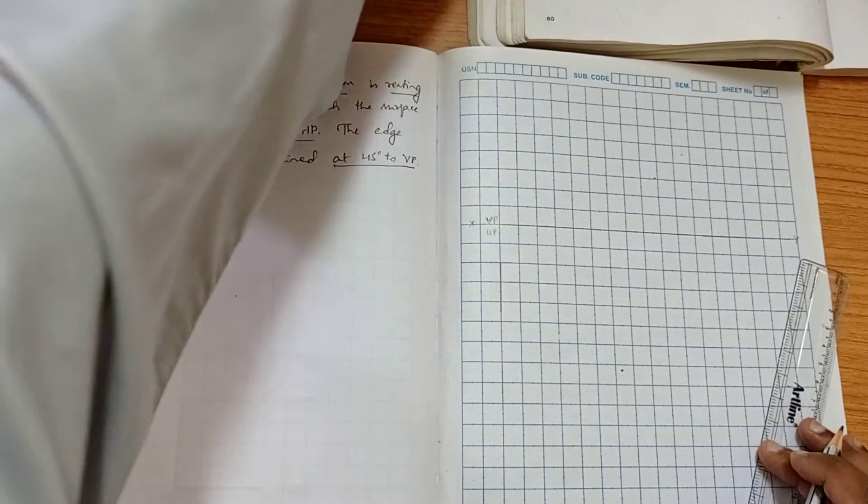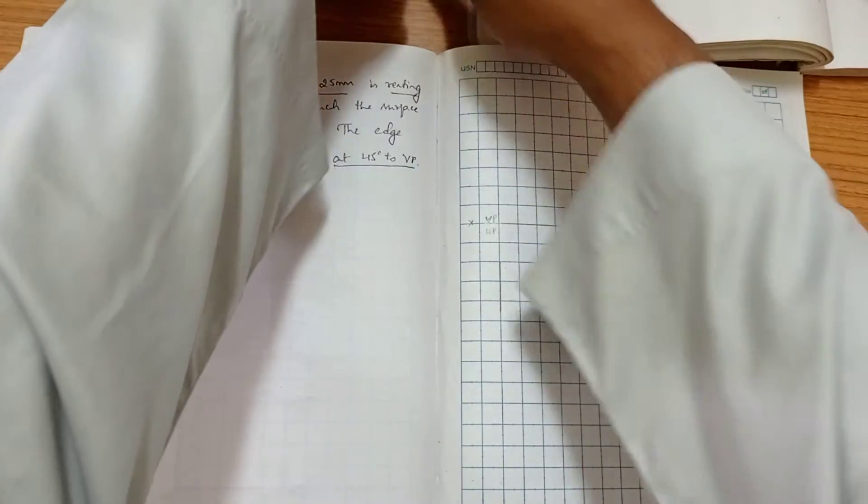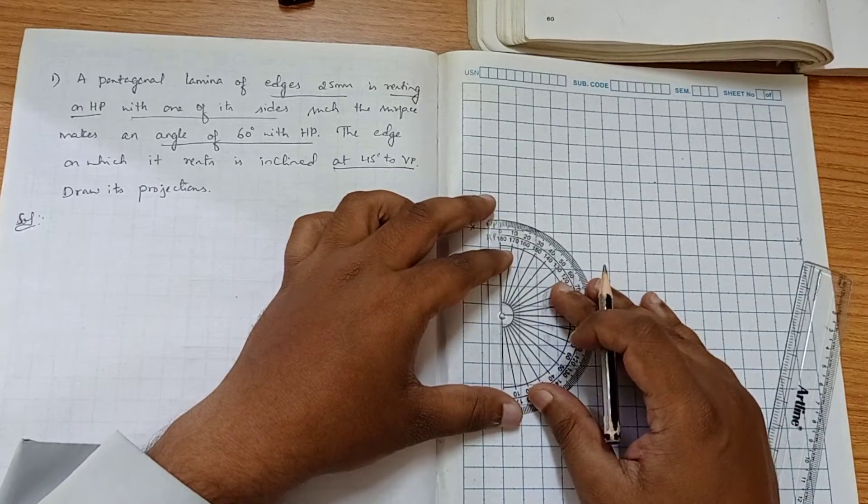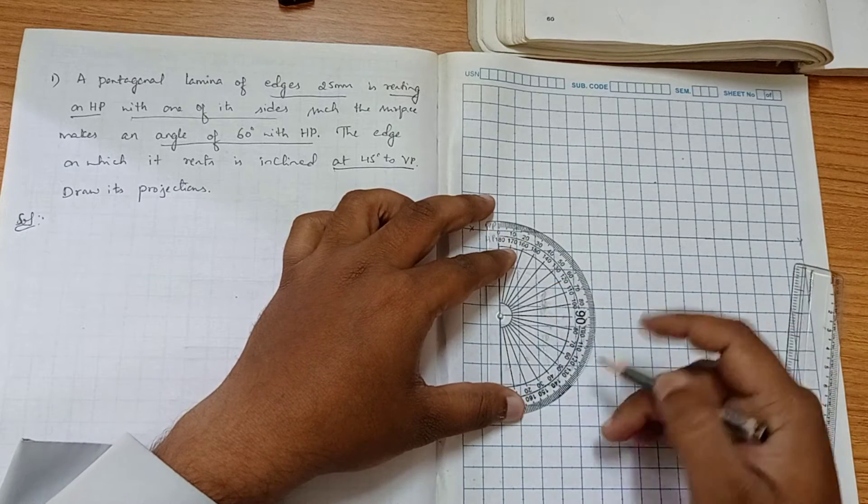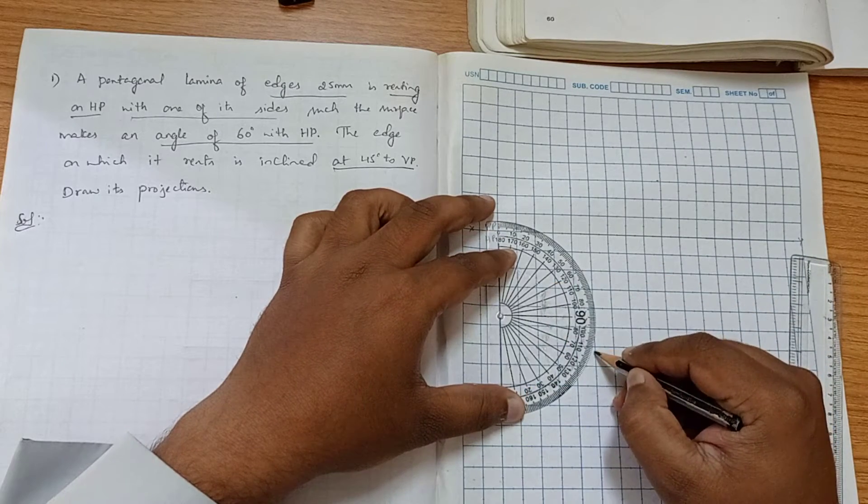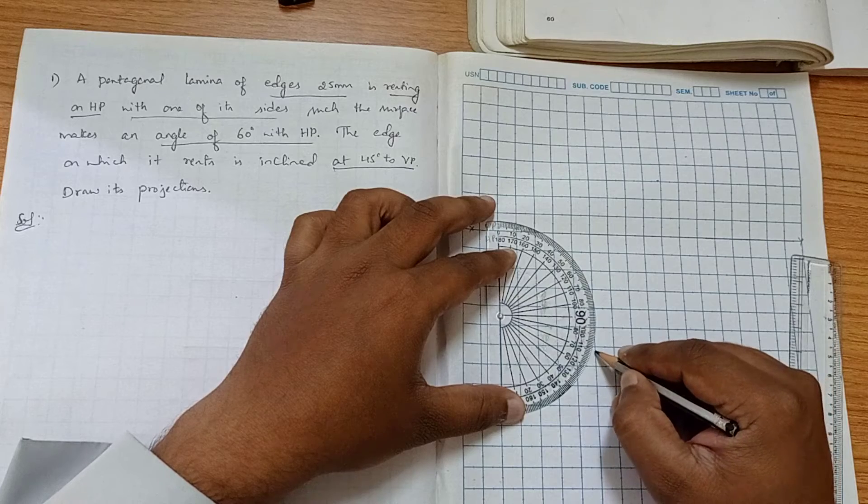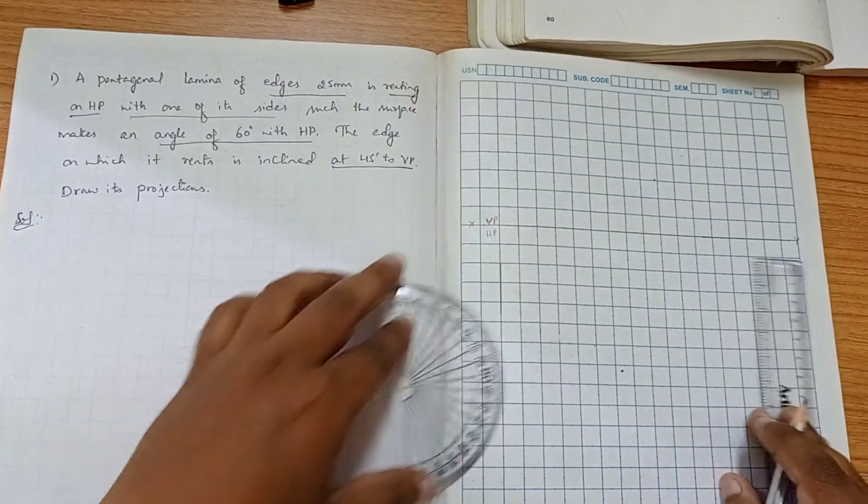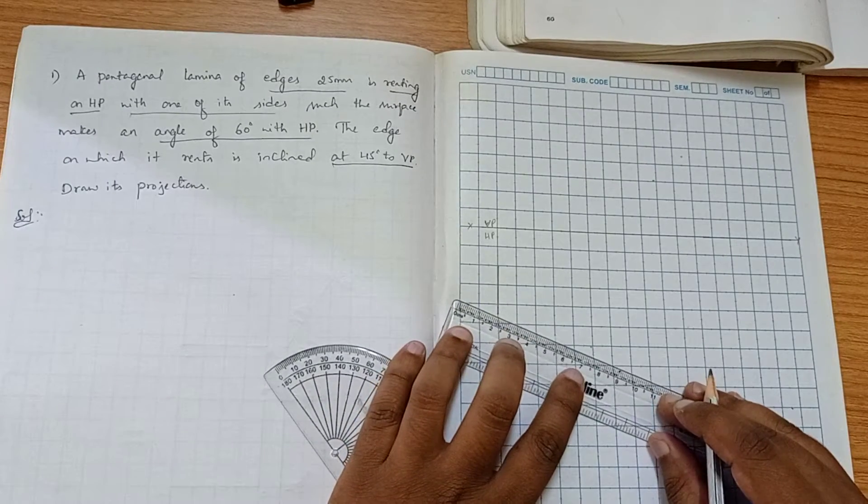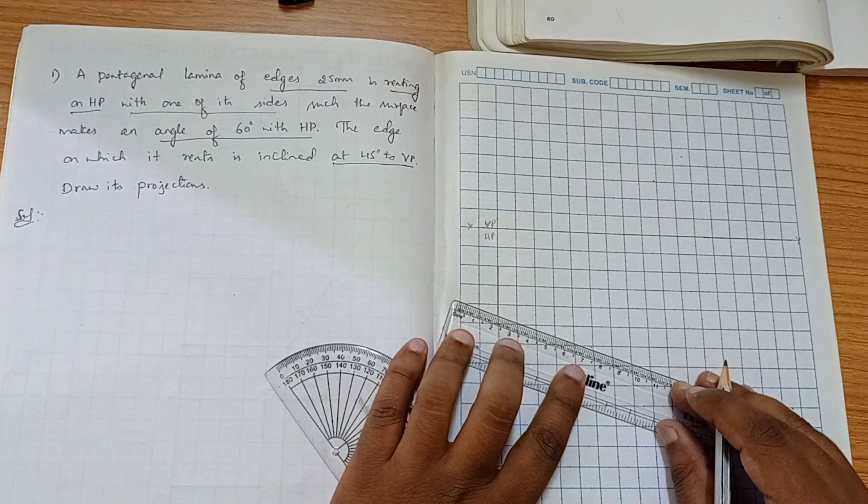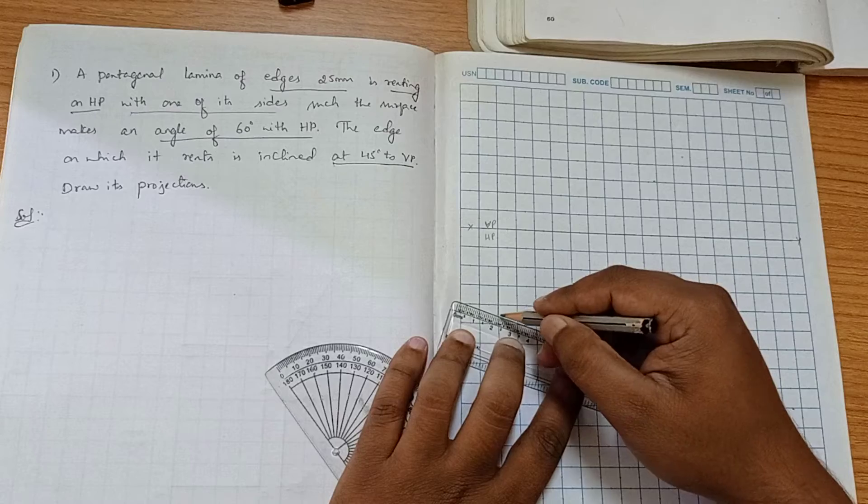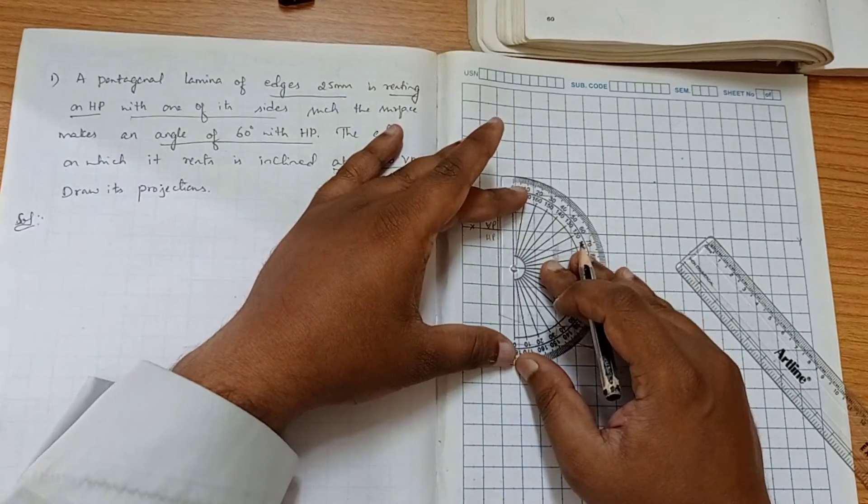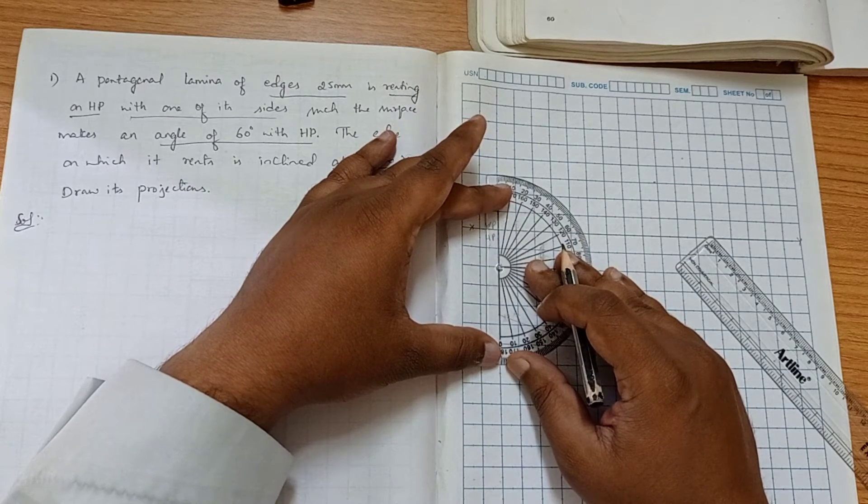So we know that we have to use the protractor for angle. The angle is 72 degree. Let me check if we are seeing each other. So we have to take the point here.